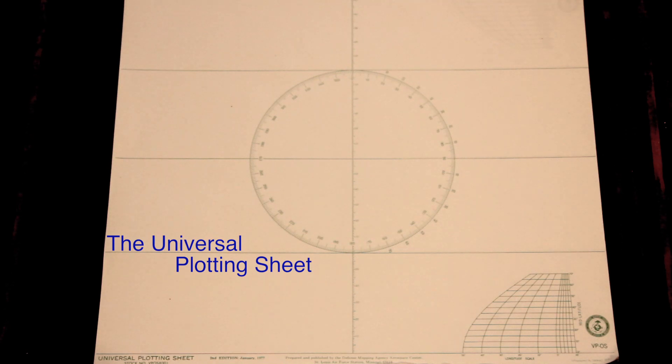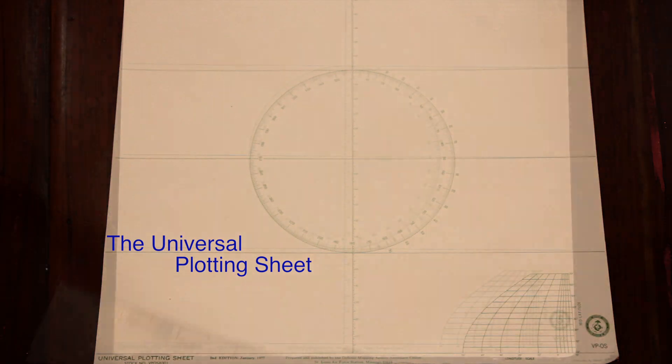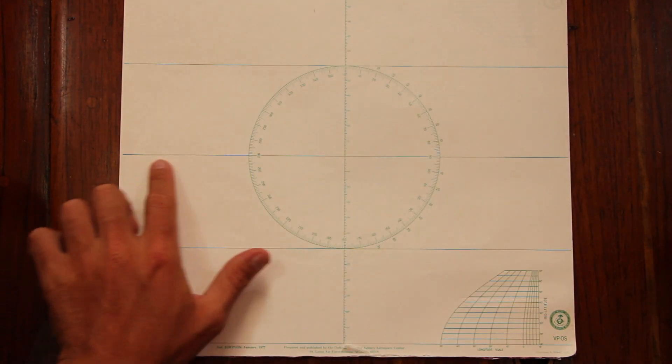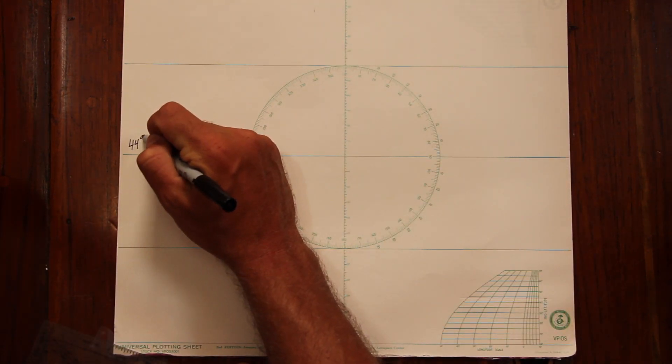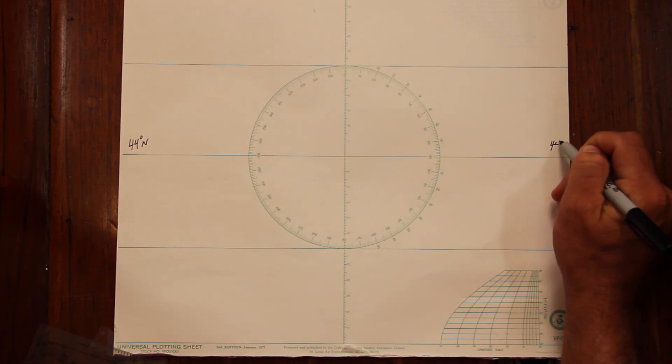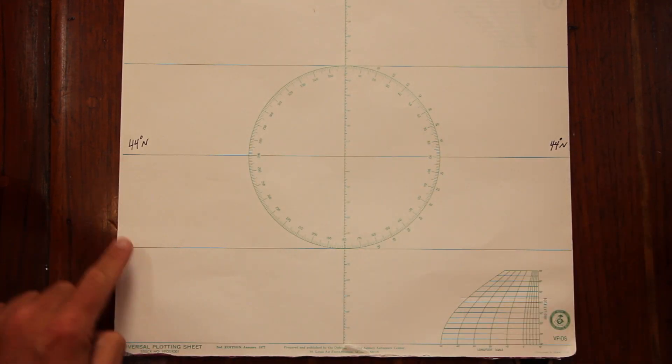This training video is about the Universal Plotting Sheet. The Universal Plotting Sheet is a way to make your own charts at your own scale. The first step is to plot your mid-latitude. Find the closest latitude to your position and plot that on the center latitude line.